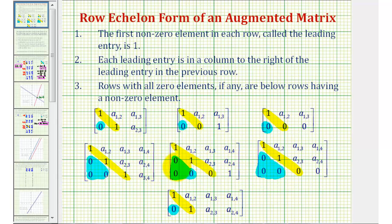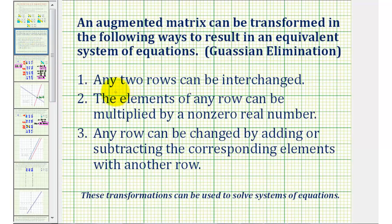This is important because this gives us a strategy to transform the matrix into row echelon form. We're able to transform an augmented matrix using a process called Gaussian elimination, which means any two rows can be interchanged, the elements of any row can be multiplied by a non-zero real number, and any row can be changed by adding or subtracting the corresponding elements with another row.